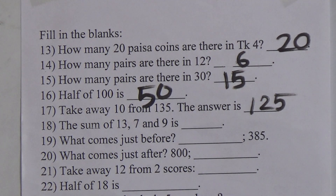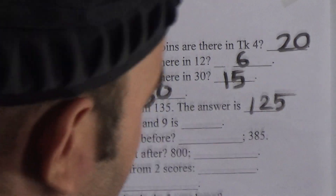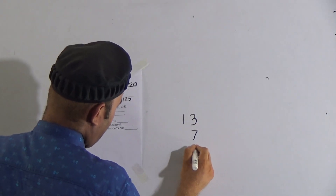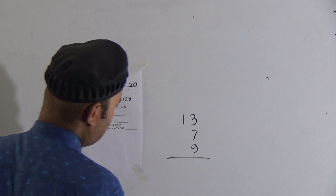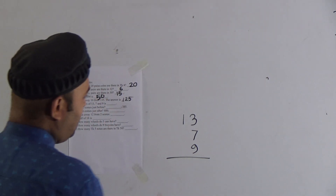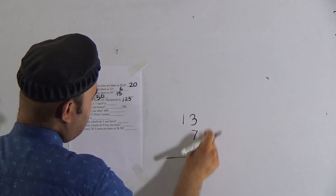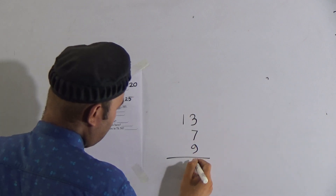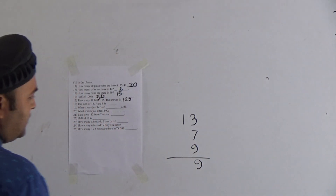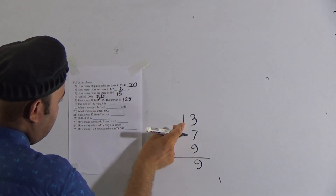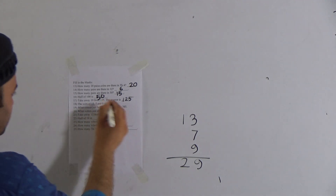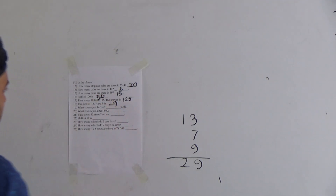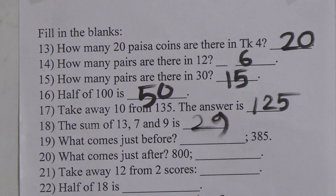Now number 18: the sum of 13, 7, and 9. Adding: 9 plus 7 equals 16. Then 16 plus 3 equals 19. We carry 1, and 1 plus 1 makes 2. So the answer is 29.